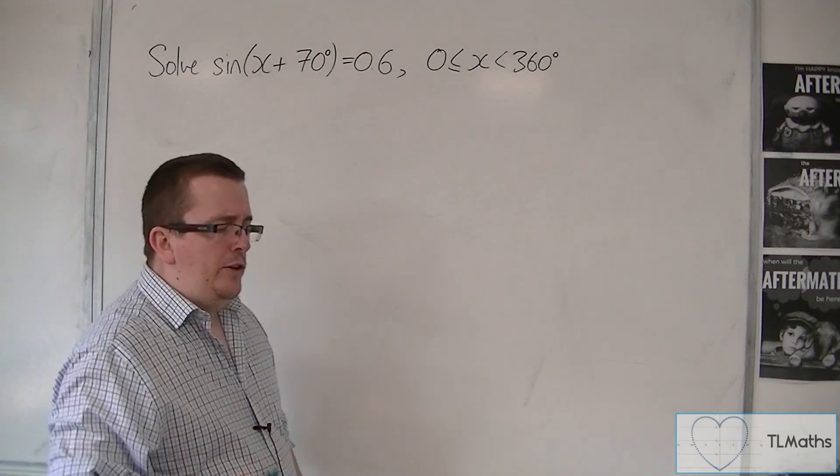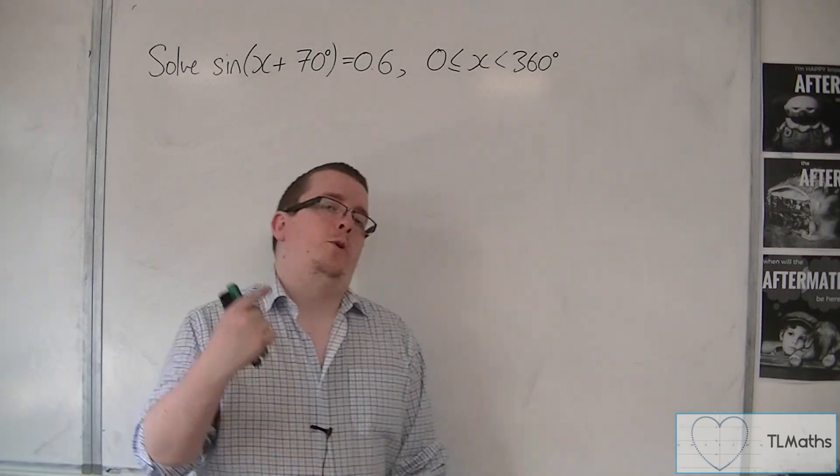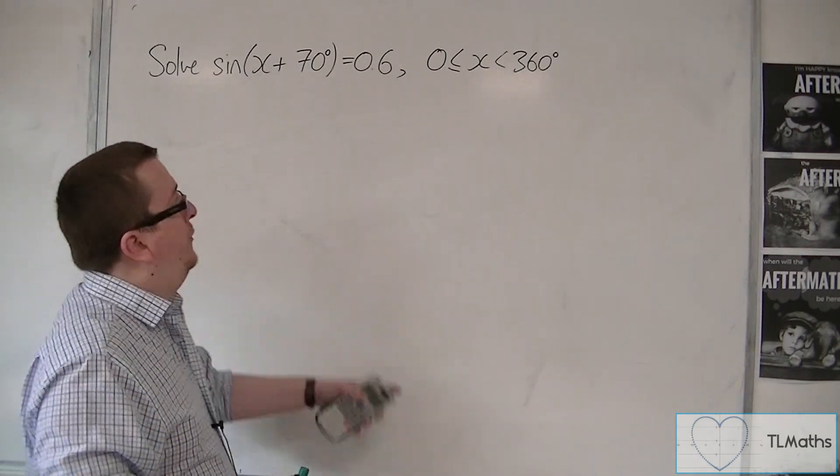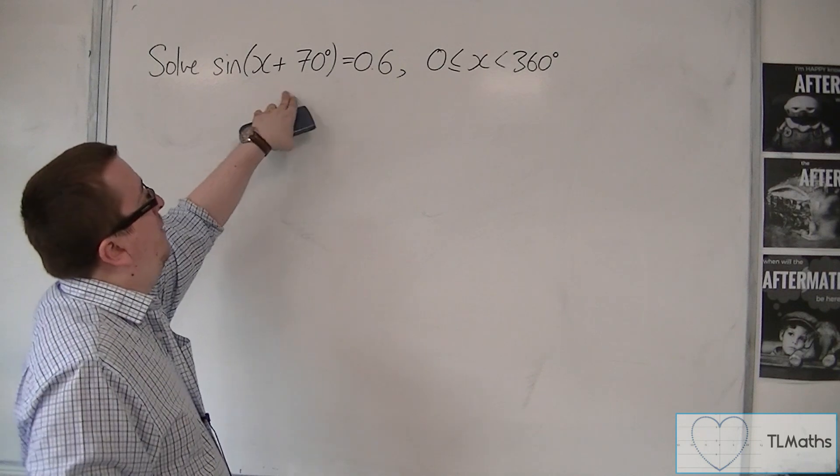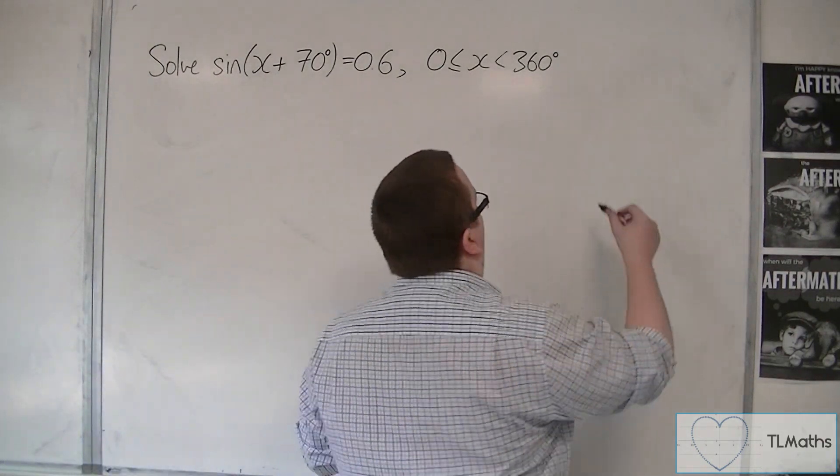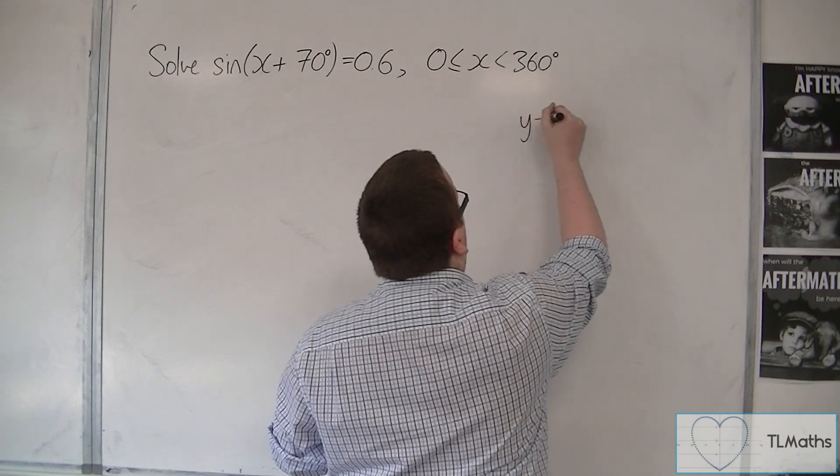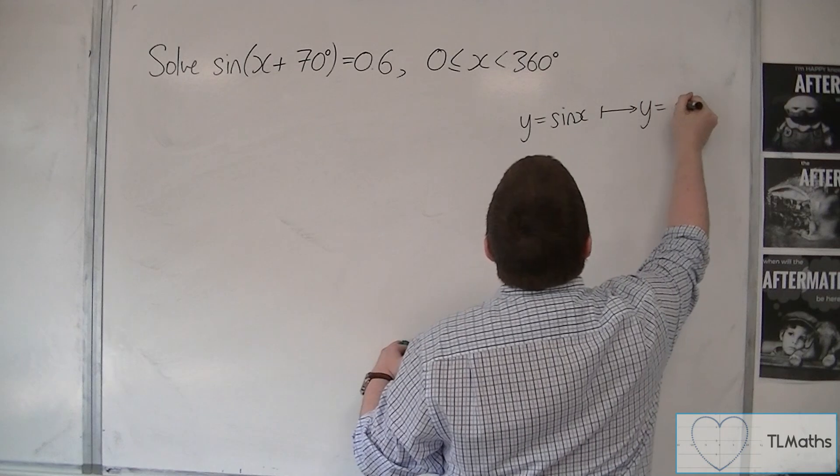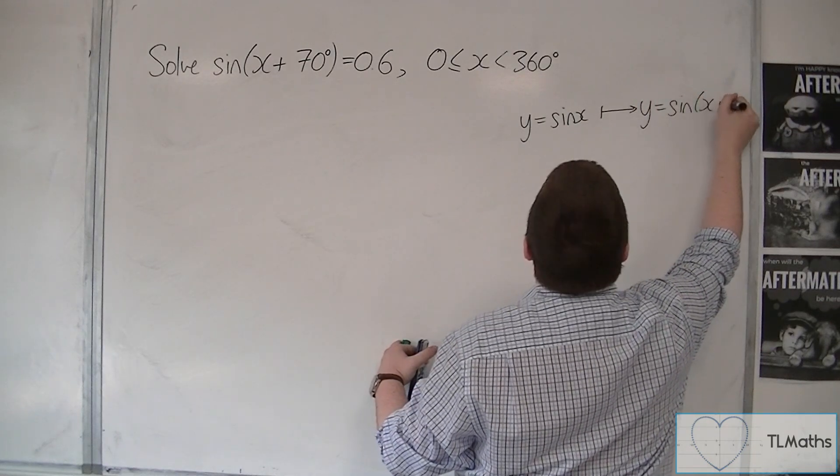Now, it is useful at this stage to be able to identify what has happened to sine x here. Because we're not solving sine x equals 0.6, we've got this plus 70 inside the bracket. So, in actual fact, sine x, y equals sine x, has been transformed to y is equal to sine of x plus 70.